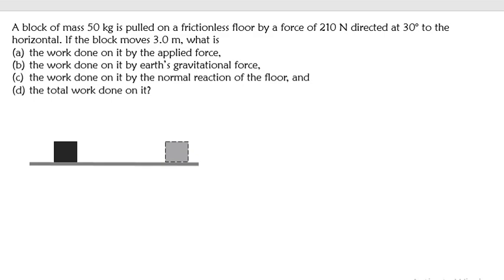A block of mass 50 kg is pulled on a frictionless floor by a force of 210 newtons directed at 30 degrees to the horizontal. If the block moves three meters, what is the work done by the applied force? To calculate this, we first break down what we've been given using this diagram. The block moved a distance of three meters, shown here.